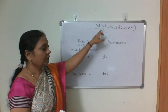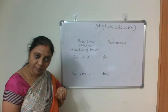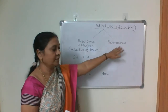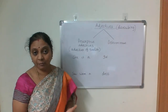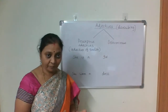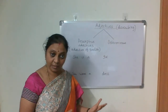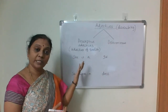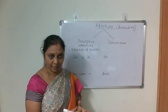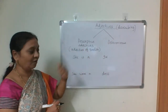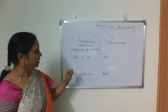Then there are two types of adjectives, broadly speaking: one is descriptive adjectives and the other one is determiners. We start with descriptive adjectives. By the name itself, it is descriptive — means describing. It describes the quality, so it is also called adjectives of quality, because they are describing the quality of a noun or a pronoun.